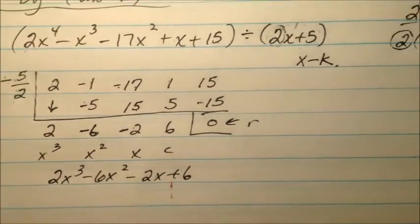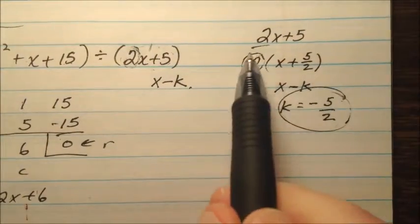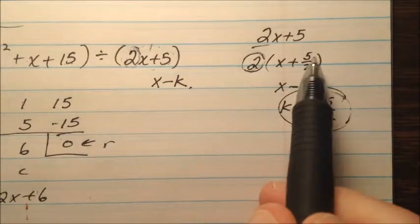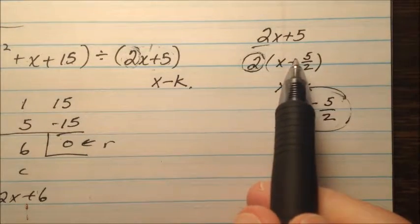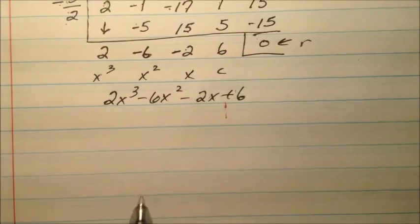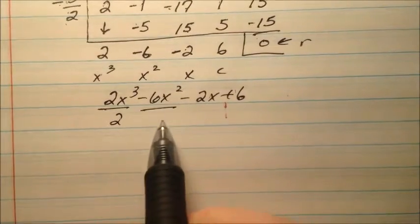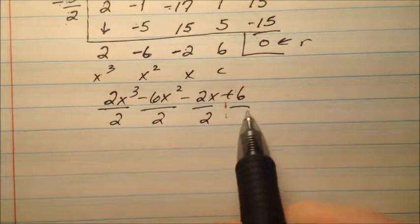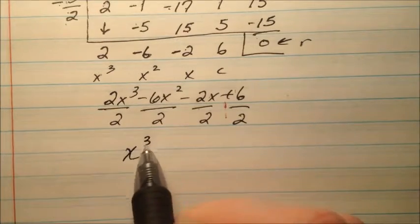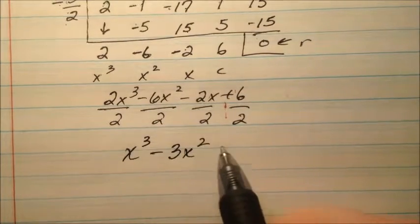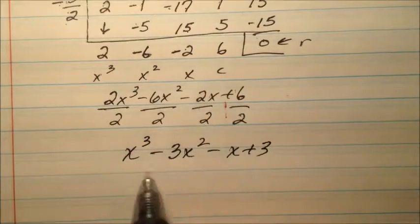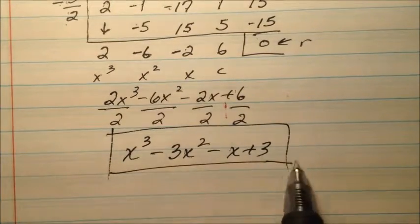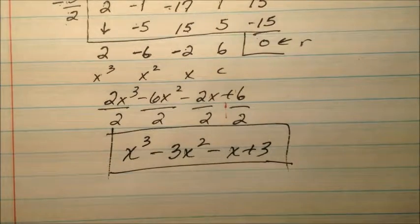But what about that 2 that I divided out initially? I kind of divided him out initially and didn't care about him. So let's divide him now. So let's divide every term by 2. And when I do that, I'll get x cubed minus 3x squared minus x plus 3.